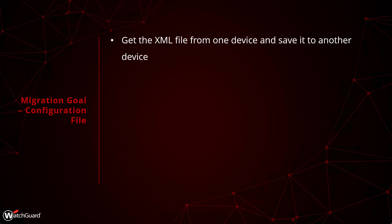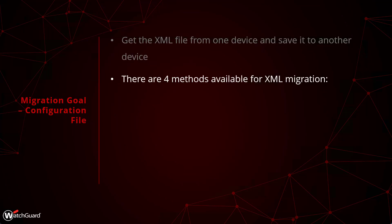The next thing you need to do is get the XML configuration from the old device or a local copy and save it on the new device. There are four methods you can use. The first option is Rapid Deploy, which is likely the easiest in most cases since it doesn't have a dependency on your current management interface. As long as you have a copy of the XML file, you can upload it to the Rapid Deploy website. When the device is in a default state and calls home to get the feature key, it can also retrieve the configuration file at the same time — no need to even log into the device initially.